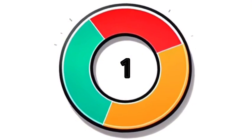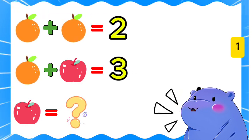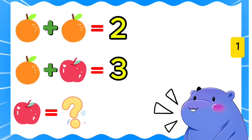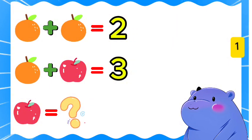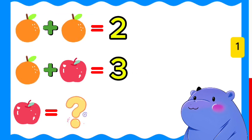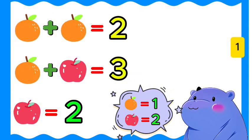Group 1. Orange plus orange equals 2. Orange plus apple equals 3. Apple equals? Apple equals 2.